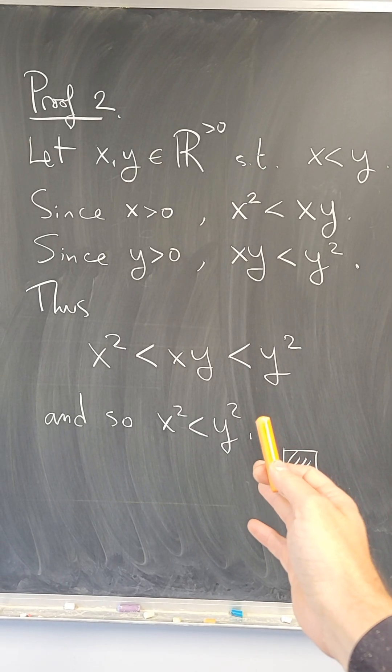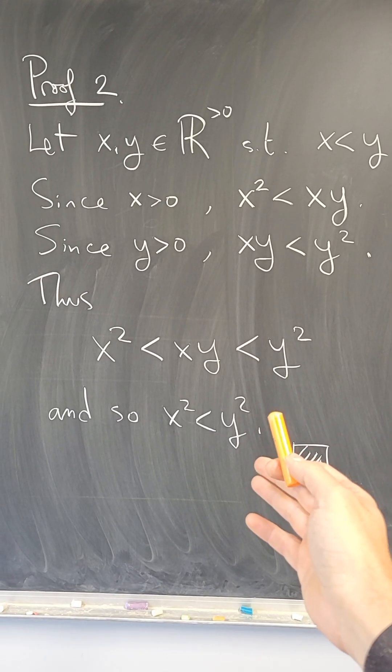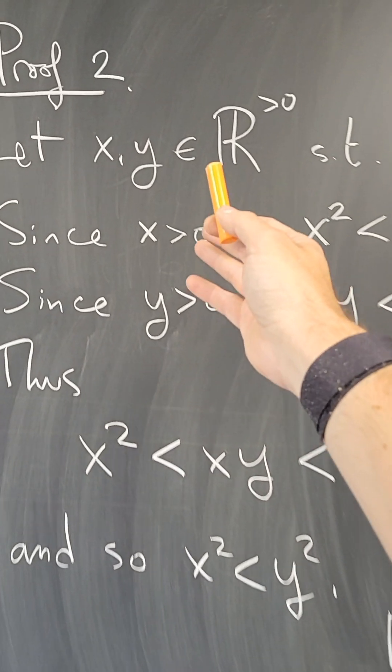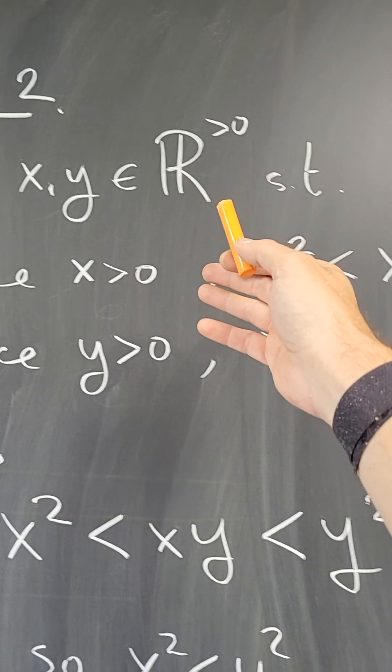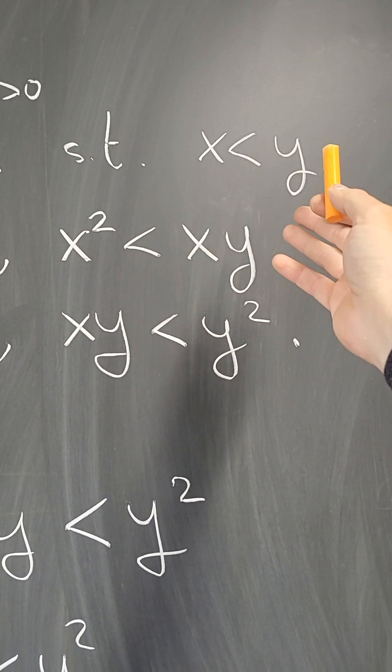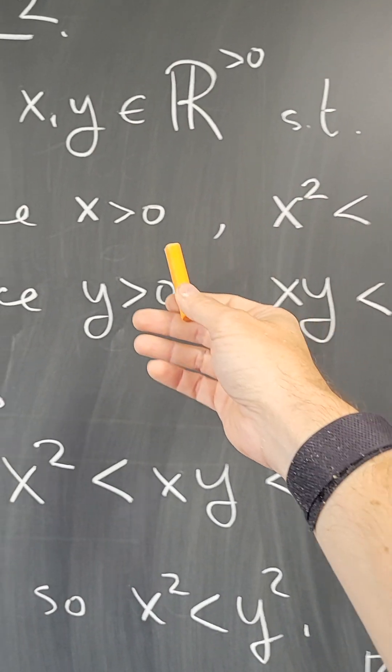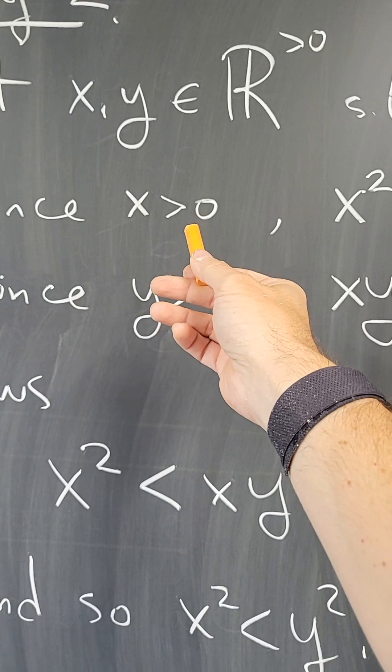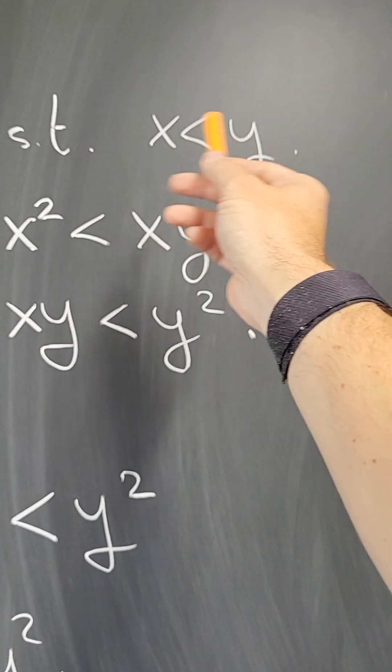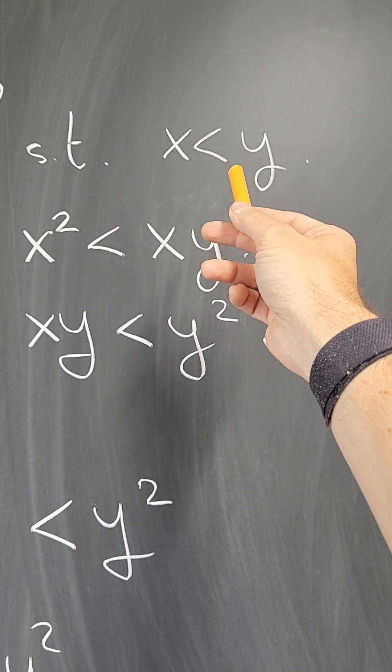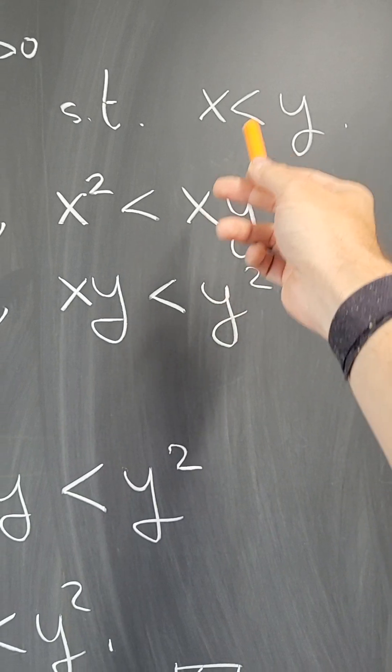Now here's a different proof that actually came up during my class about this. So if you take x and y to be positive reals such that x is less than y, then for one thing x is positive, so if I multiply both sides of this inequality by x, I get another inequality in the same direction.